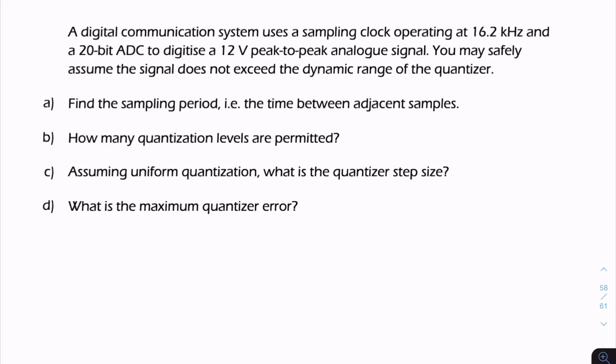This question describes a digital communication system where we have a sampling clock operating at 16.2 kilohertz and a 20-bit ADC to digitize a 12V peak-to-peak analogue signal.